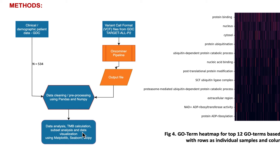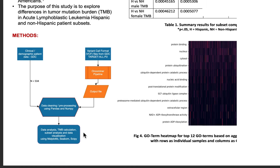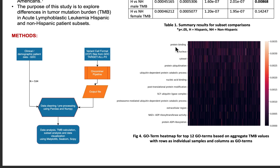For each patient, we made a list of genes along with their individual tumor mutation burden values. Differences in TMB subsetted by clinical and demographic data were then analyzed, and data analysis and visualization was done using Matplotlib, SciPy, and Seaborn.